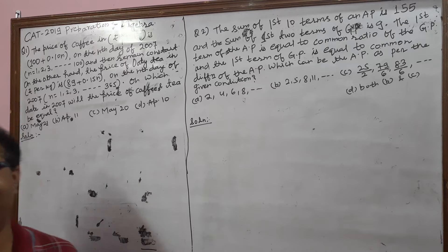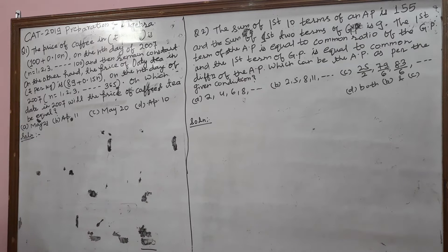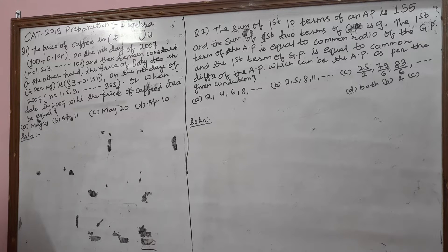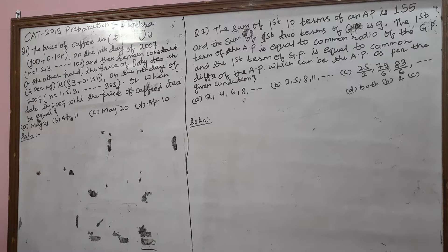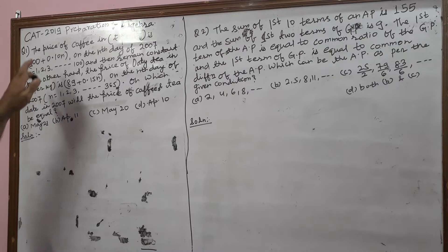Good evening. This is a CAT preparation session with 19 preparations. The chapter is algebra — basically a mixture of progressions and other algebra chapters. This is important for this year to earn a CAT 19 score. First question: